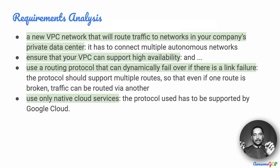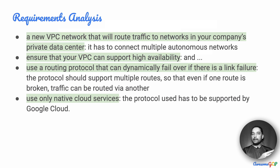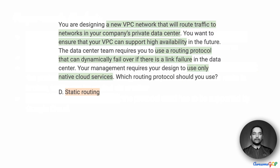In the requirement analysis, we can see that there are multiple autonomous networks. Each of these networks could have different machines going down or coming up. It could have different sub-networks being created or deleted, and these have to continue to be in communication even when there is a link failure on one route. So there should be an easy failover that reroutes traffic through another route, and we only want to use the services available within Google Cloud.